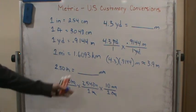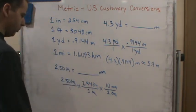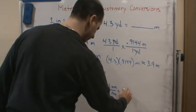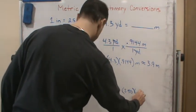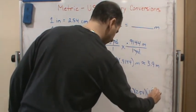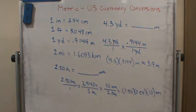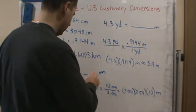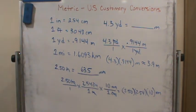And so the centimeters cancel, and now I just multiply across the top. I've got ones on bottom, so that's just going to give me 1. So this is going to end up just being 2.50 times 2.54 times 10 millimeters. That gives 63.5 millimeters. So 63.5 millimeters is the answer.